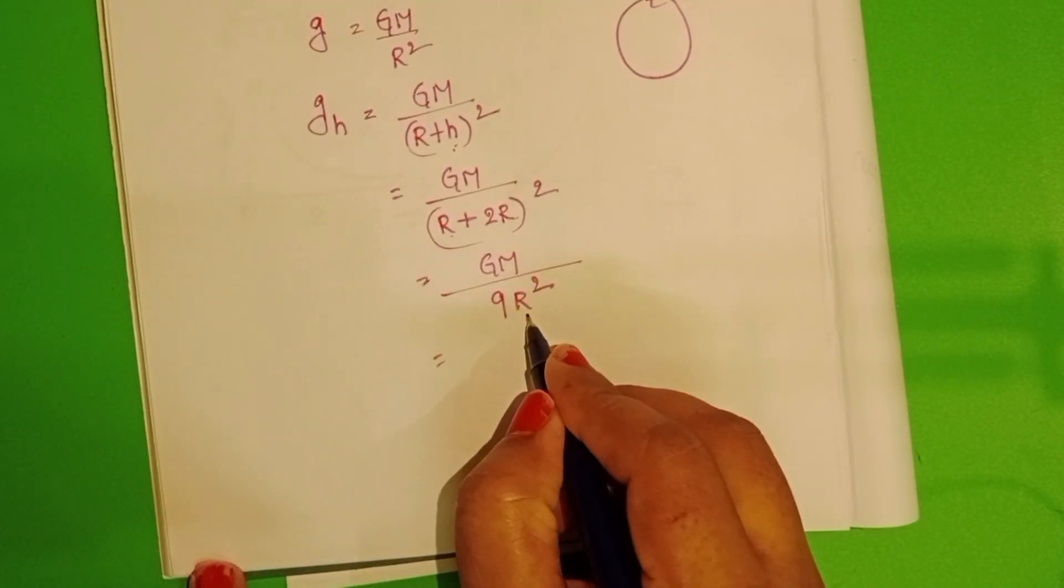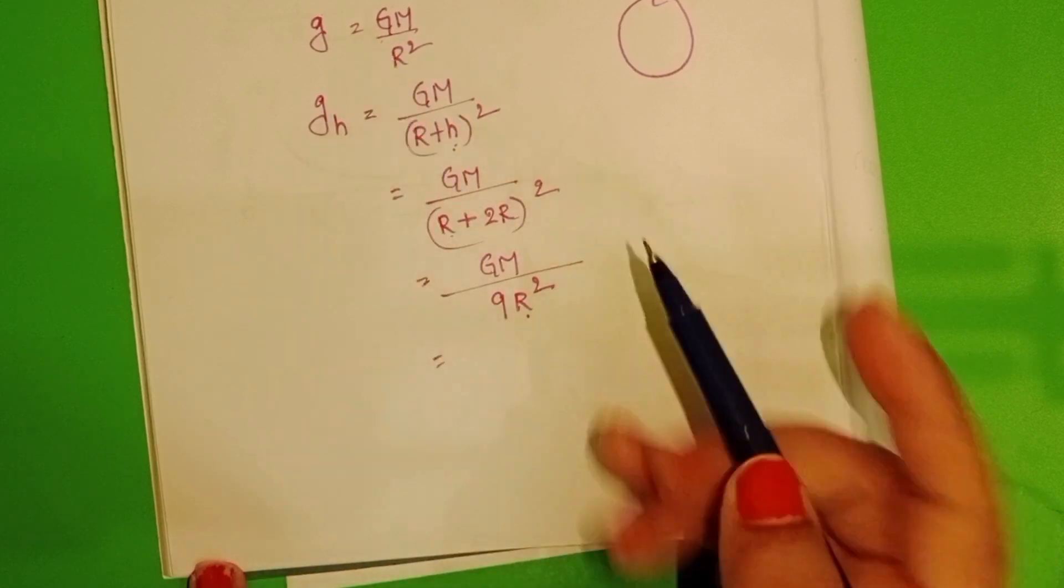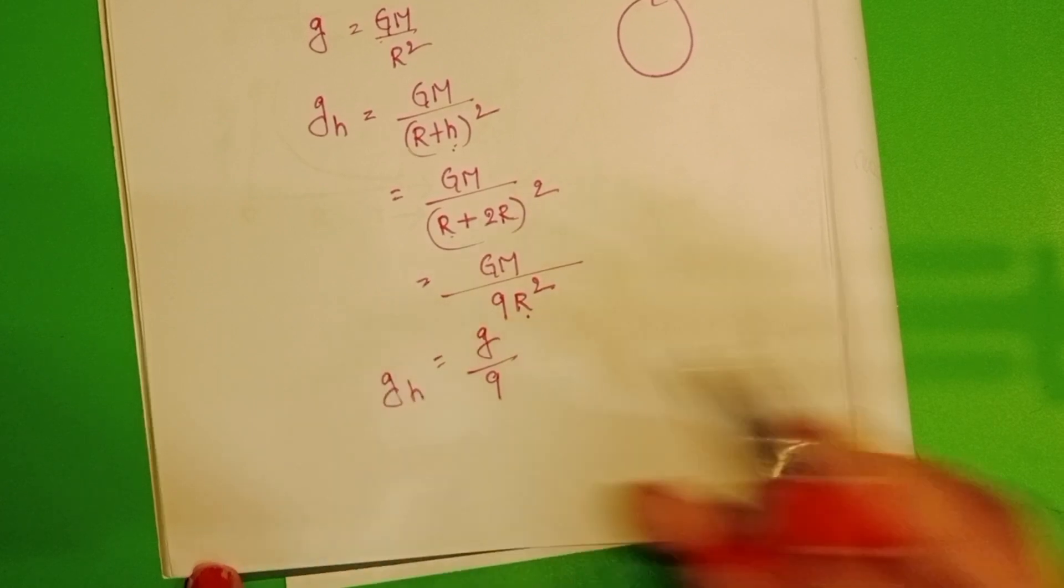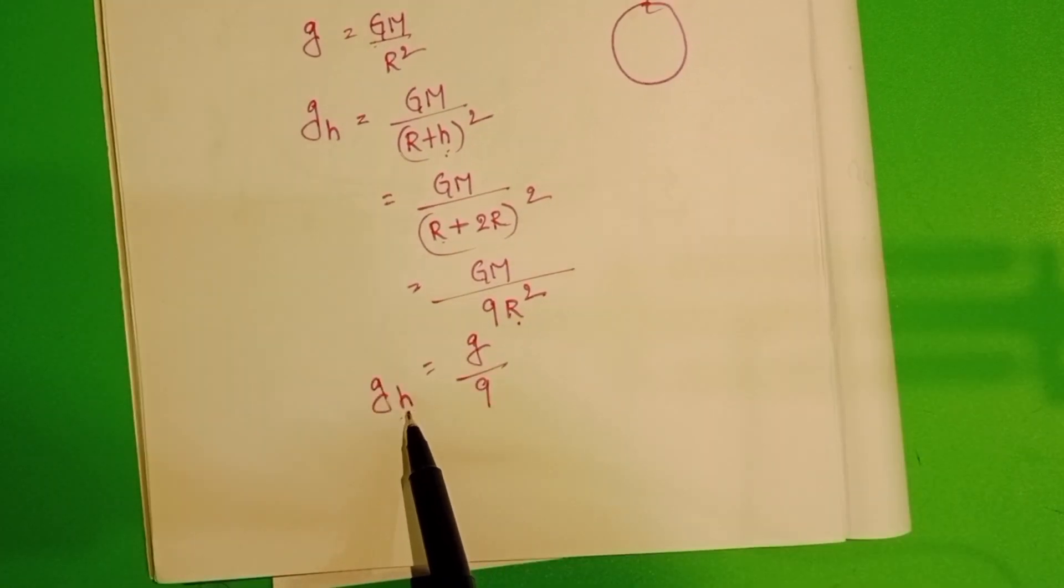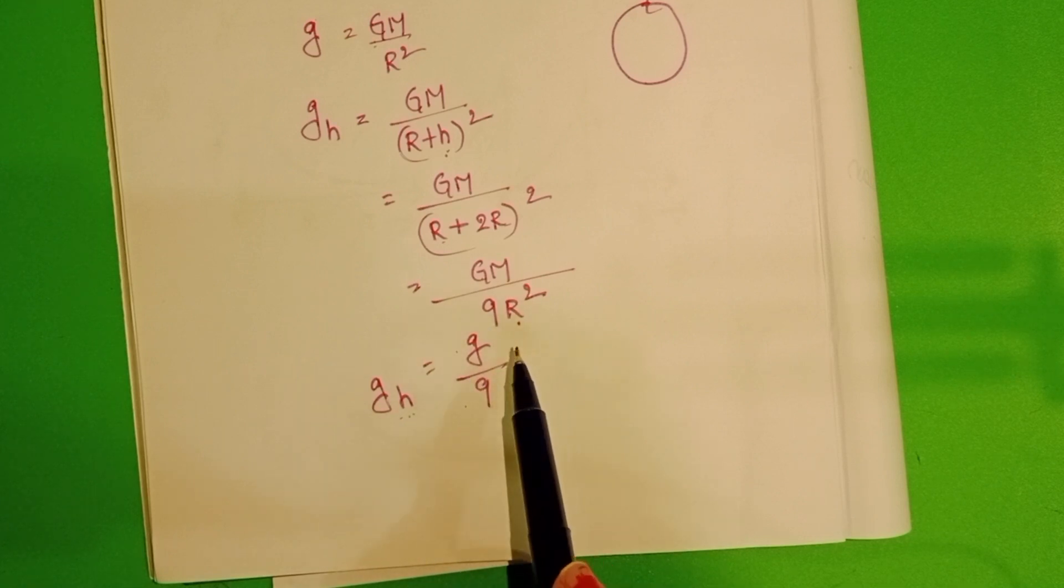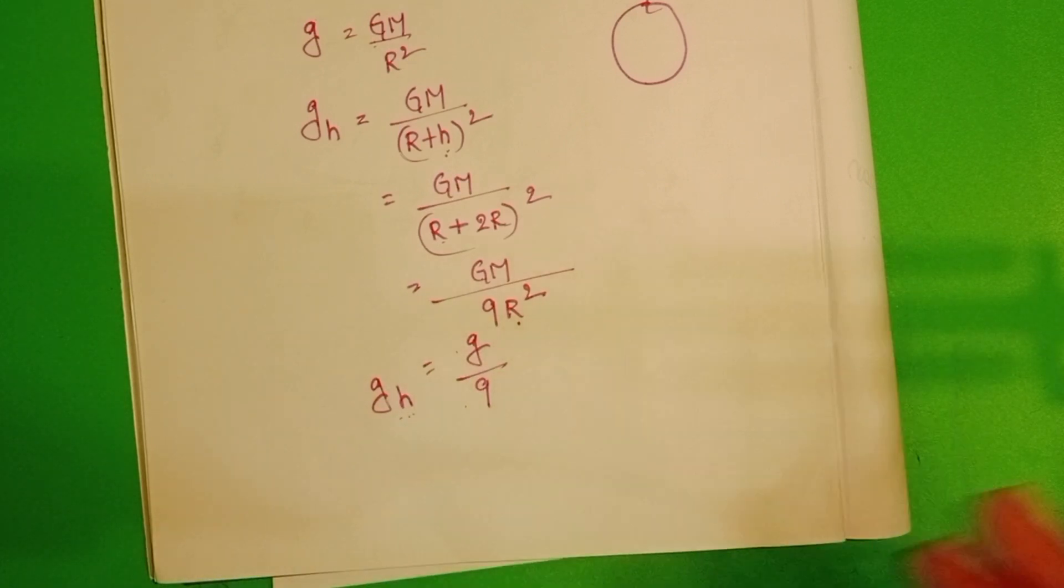We know GM/R² is the acceleration on the surface of the earth. Substitute g/9 here. So acceleration due to gravity at the given height is 1/9 times the acceleration due to gravity on the surface of the earth.